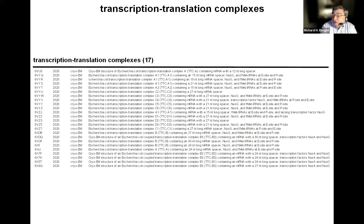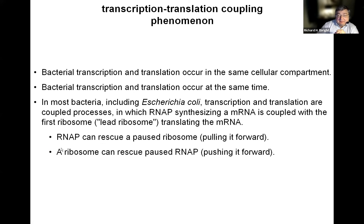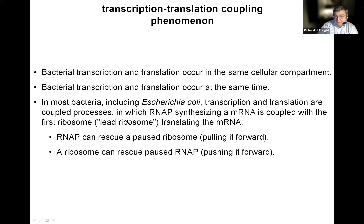The transcription process is tightly integrated with other cellular processes, and in bacteria and archaea is very tightly coupled in particular to translation. In 2020, we reported a series of single-particle reconstruction cryo-EM structures that reveal the structural basis of this transcription-translation coupling. Bacterial transcription and translation occur in the same cellular compartment at the same time, and in most bacteria, including E. coli, transcription and translation are coupled processes in which RNA polymerase synthesizing a messenger RNA is kinetically, physically, and functionally coupled with the first ribosome—the lead ribosome—translating the messenger RNA.